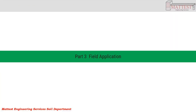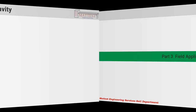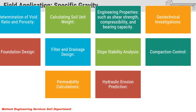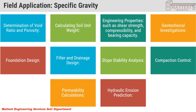The third part is Field Application of Specific Gravity. Applications include: determination of void ratio and porosity, calculation of soil unit weight, engineering properties such as shear strength, compressibility and bearing capacity, geotechnical investigation, foundation design, filter and drainage design, slope stability analysis, compaction control, permeability calculation, and hydraulic erosion prediction.